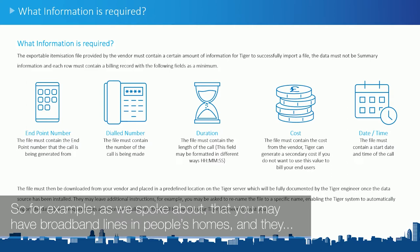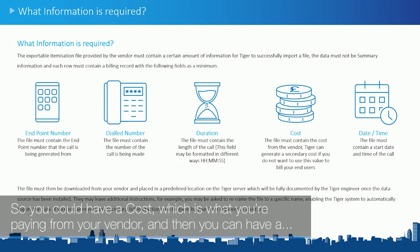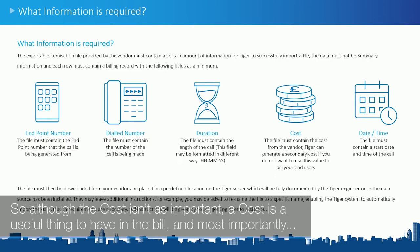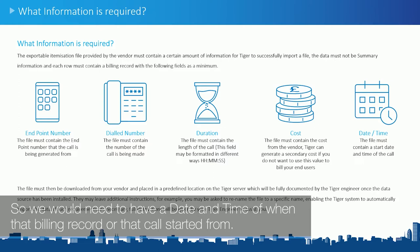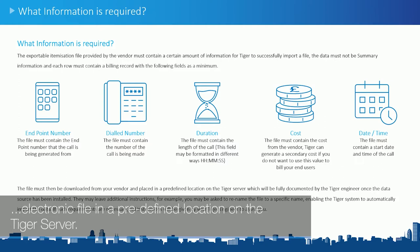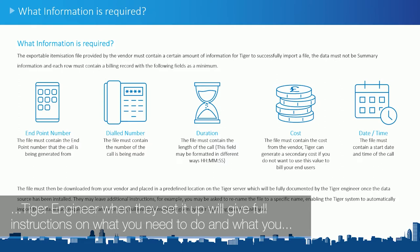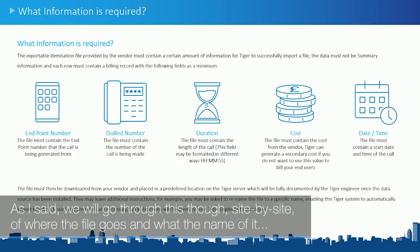For example, if you have broadband lines in people's homes and they use them for personal calls, you may be charged one pence per minute for national calls but want to bill your end users at 10 pence per minute. So you could have a cost — what you're paying your vendor — and a bill — what you charge the end user. Most importantly is the date and time, so we would need to know when that billing record or call started. You must be able to download that information from your vendor and place the electronic file in a predefined location on the Tiger server. The Tiger engineer will give full instructions on what the file needs to be named to allow data to be automatically imported.